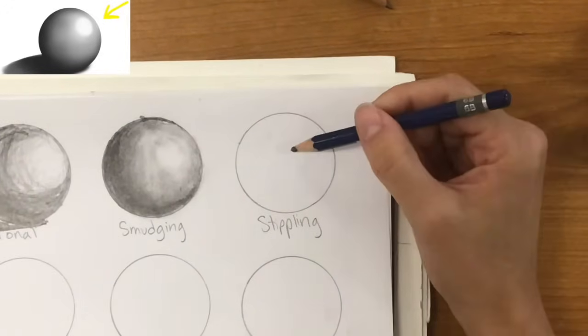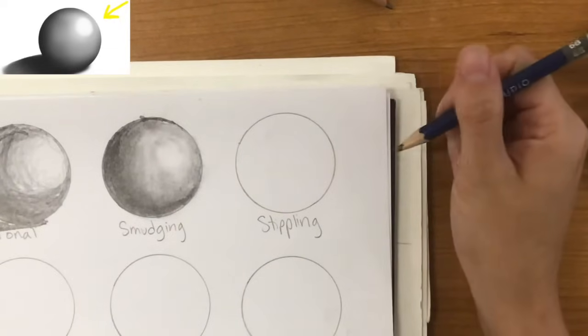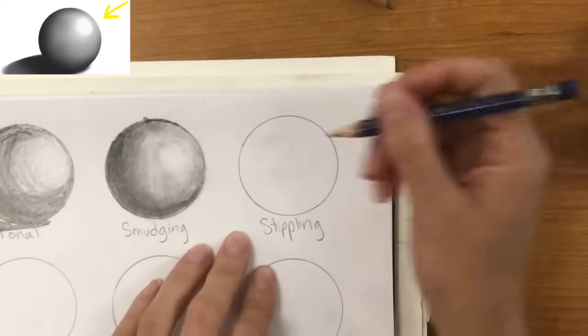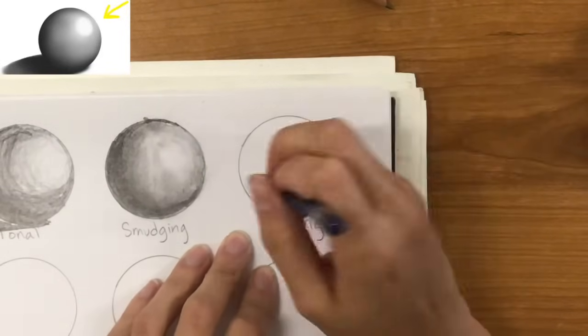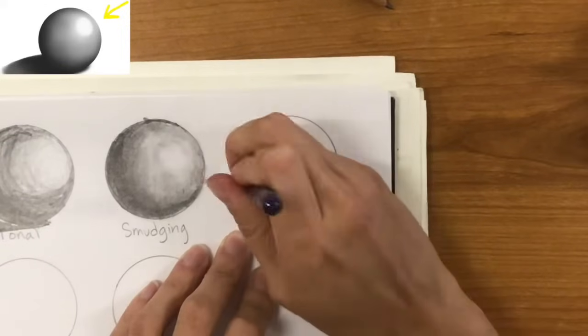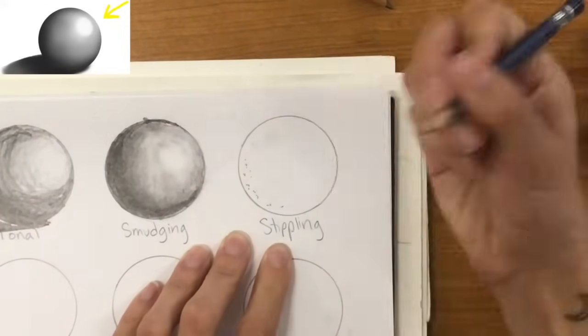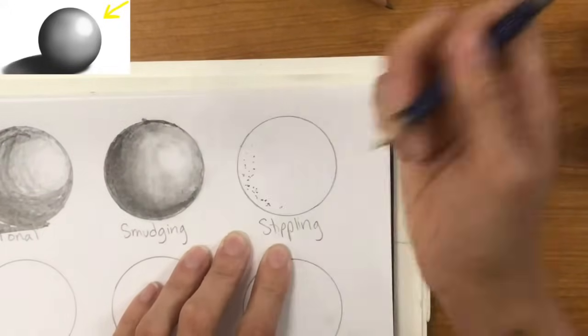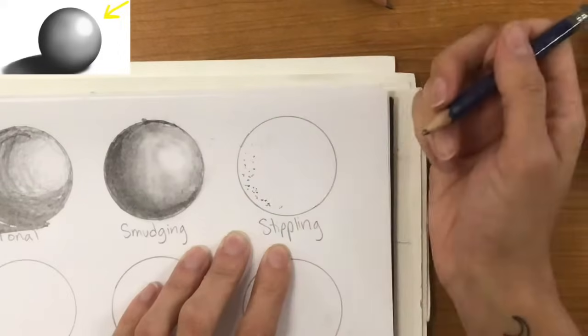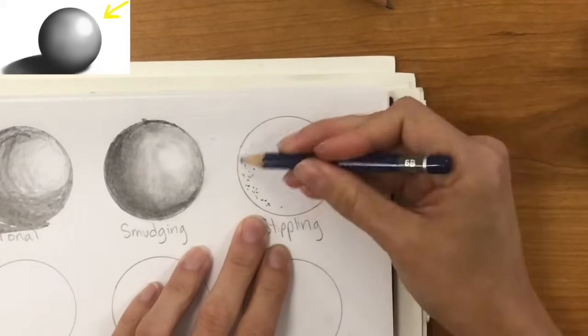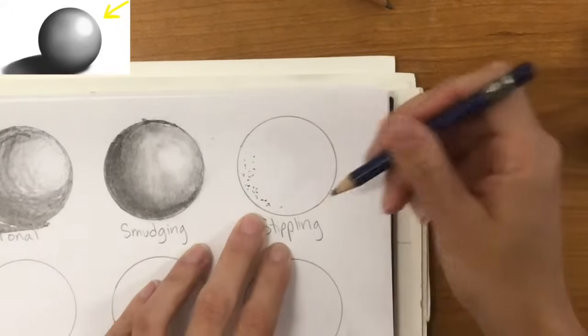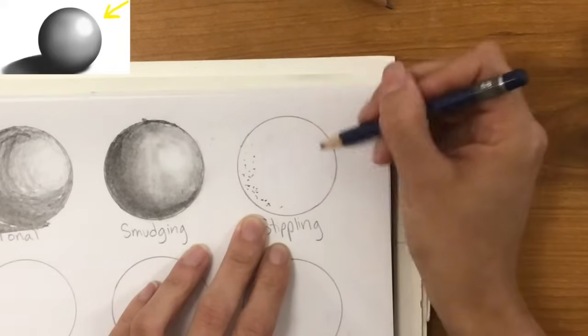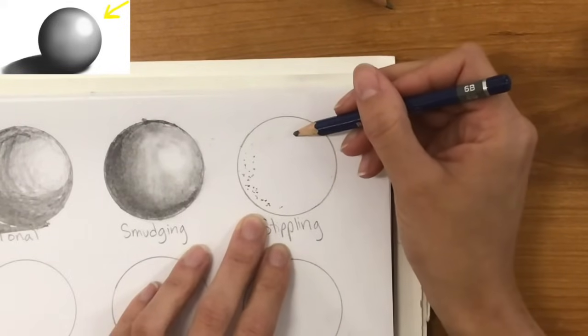All right. This next technique is stippling. This one is going to take a little while. It might get a little bit frustrating. But if you keep up all the hard work, it will end up with a pretty nice result. So stippling is just making a bunch of dots. Like so. You can also keep your hand on the paper and just kind of tap down like this. Or you can kind of tap your whole hand up and down. So what you want to do is make sure that you've got lots of dots, very concentrated, very close together here. And then start to spread them out as you get closer to that bright spot of the highlight.